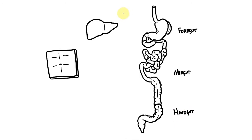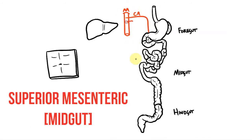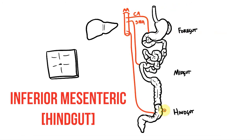Each of these divisions received most of its blood supply from a single unpaired branch of the abdominal aorta. The celiac axis supplies the foregut, the superior mesenteric supplies the midgut, and the inferior mesenteric supplies the hindgut.